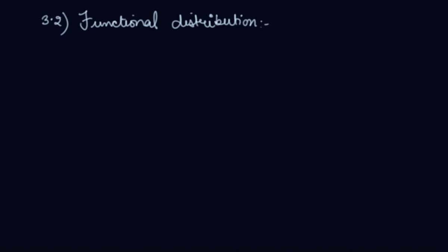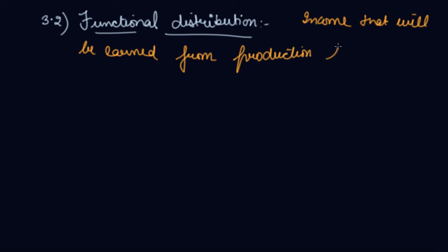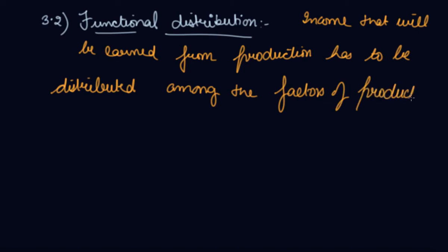The second aspect in for whom to produce is your functional distribution. The income that you will earn from your production has to be distributed among the factors of production. The factors of production are your land, labor, capital, and enterprise.